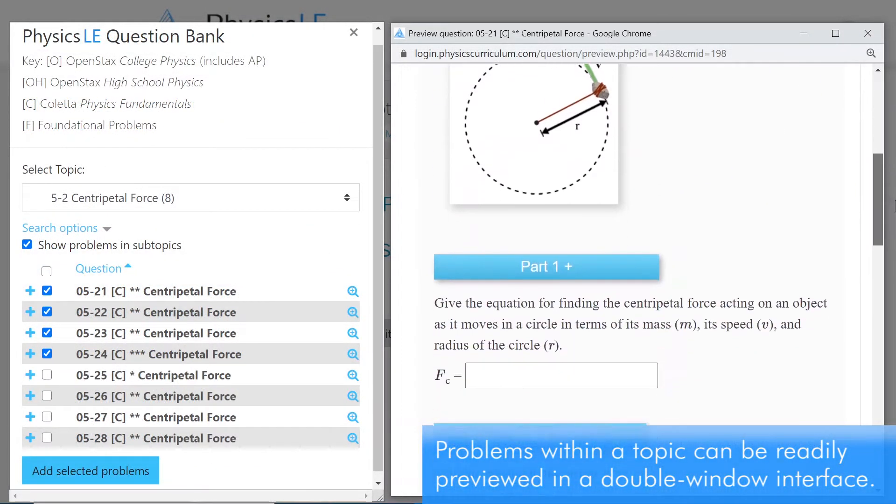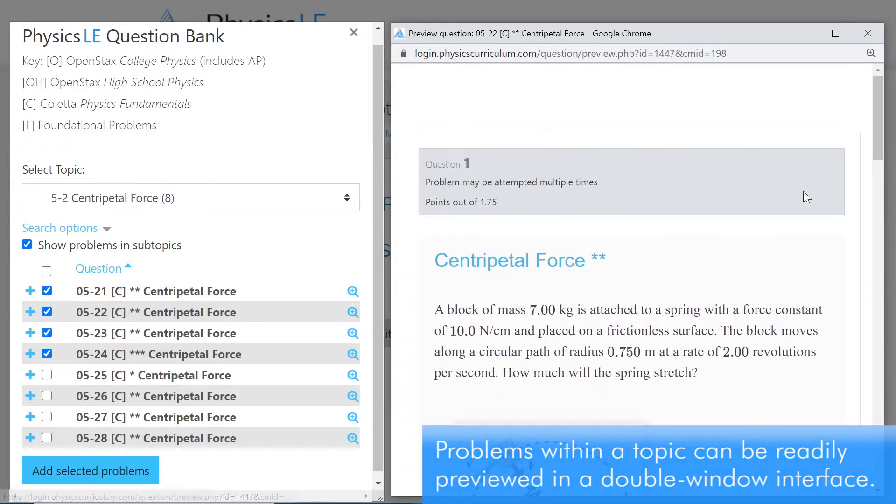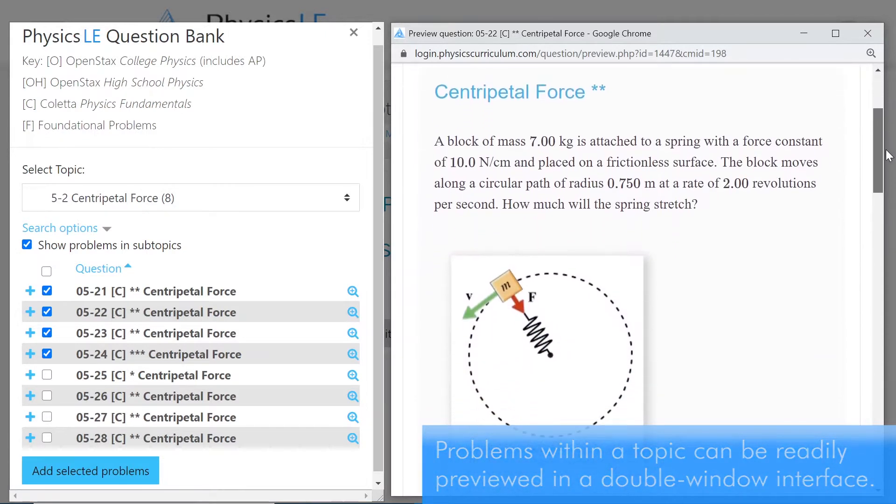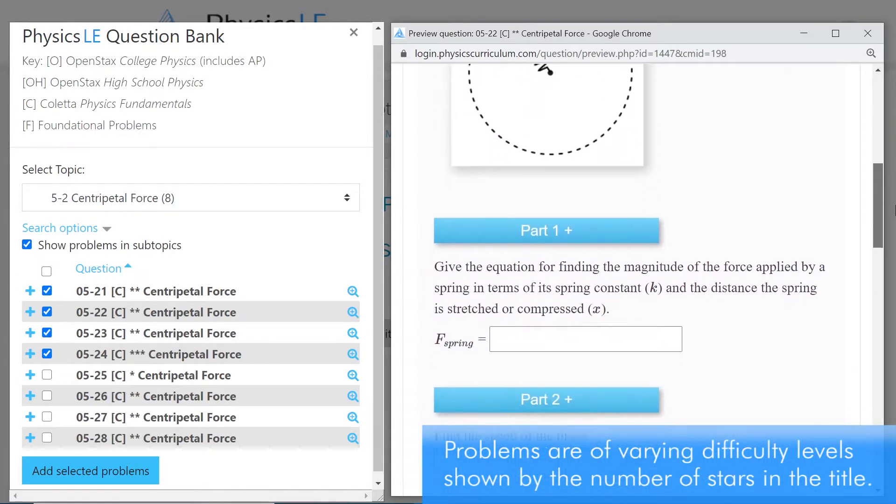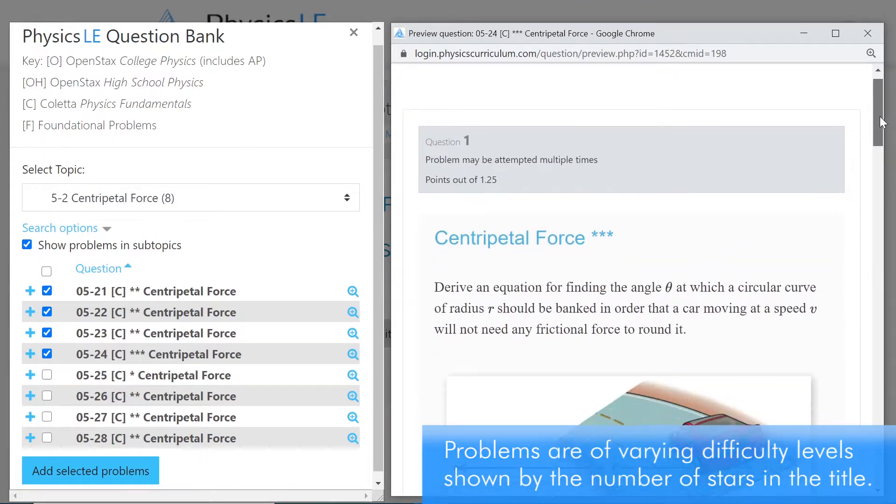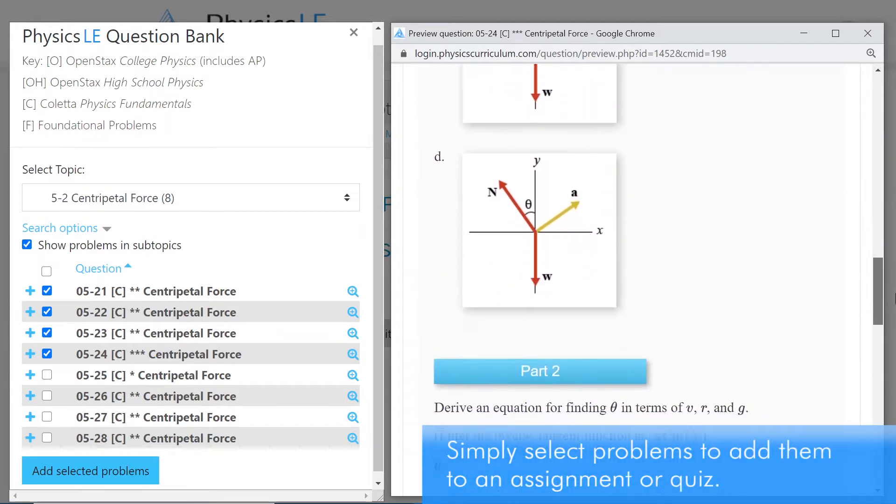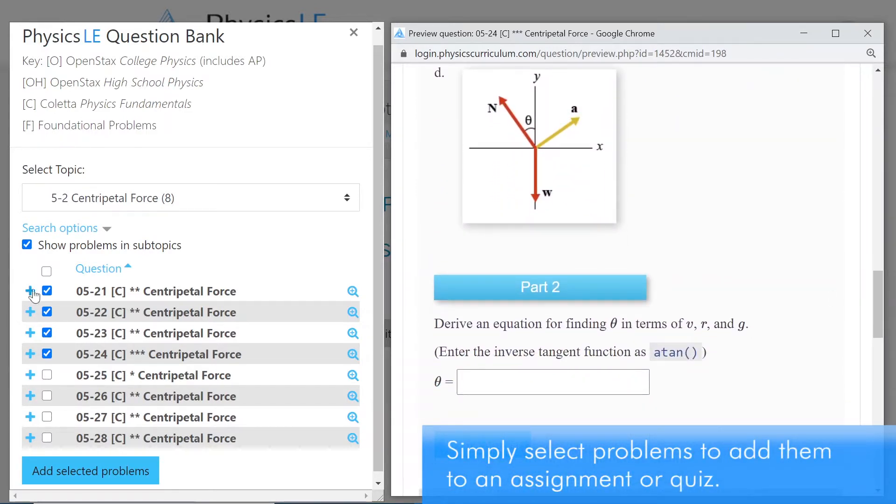Problems within a topic can be readily previewed in a double window interface. Problems are at varying difficulty levels shown by the number of stars in the title. Simply select problems to add them to an assignment or quiz.